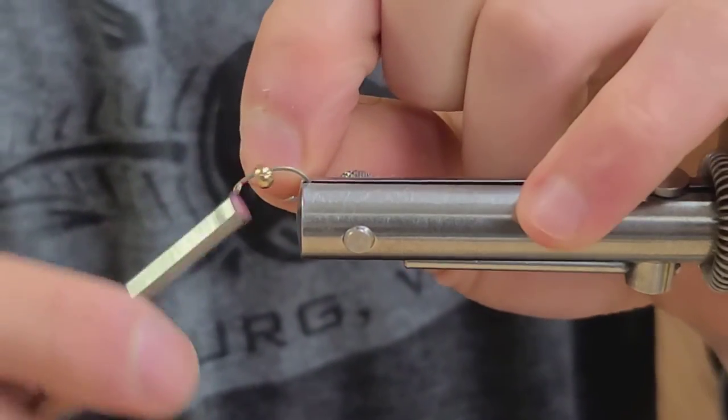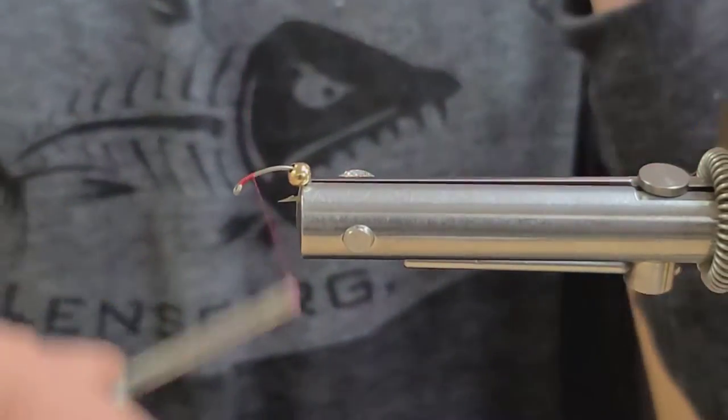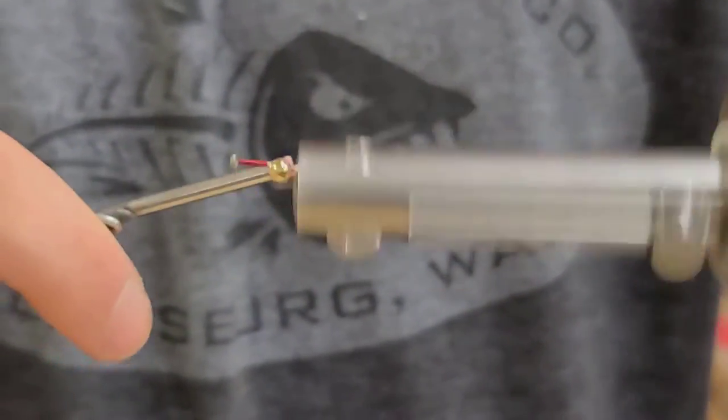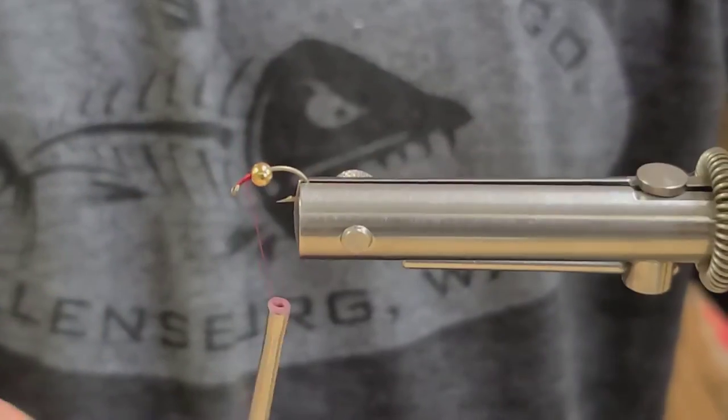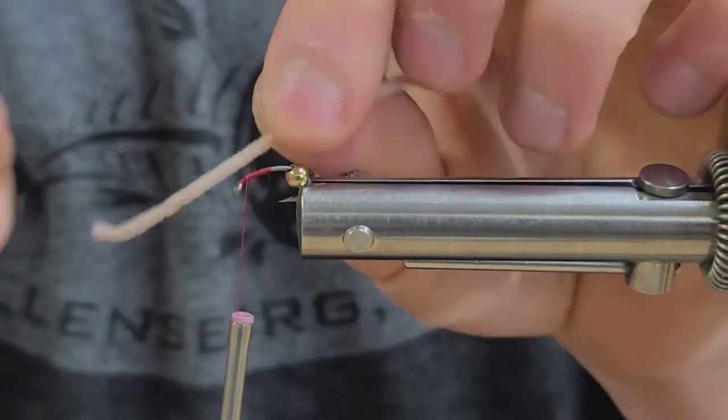I'm going to start by tying a head of the bead here. Just get it started, get a good thread base down. And I'm going to have the tan color coming out the front here, like that.